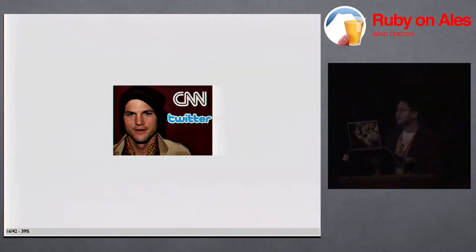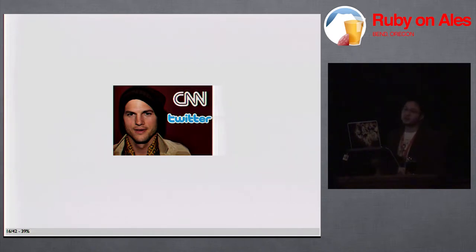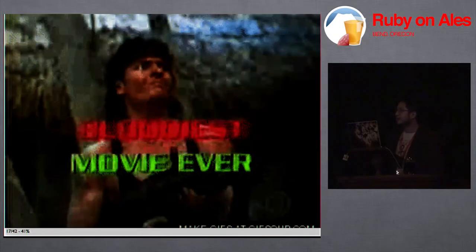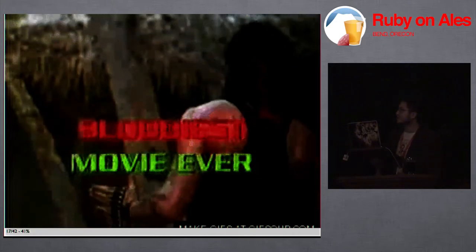But that runs into other issues. This is Ashton Kutcher — he's got like six million followers on Twitter, and every time he does something, Twitter has to update six million feeds, which is insane. And then Charlie Sheen had the same thing where he signed on, and like one day he had like a million followers, which is just crazy.